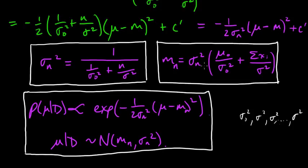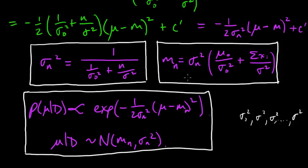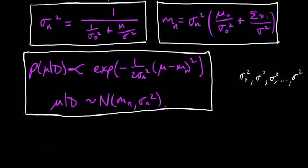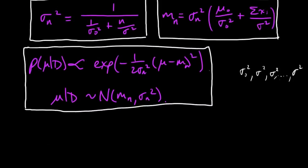This part here — m_n — is the mean of the posterior distribution, and in fact it also equals the MAP estimate for mu, because it's the maximum a posteriori. For a Gaussian, the maximum of the distribution occurs at the mean. So let's write this out in a slightly different way.